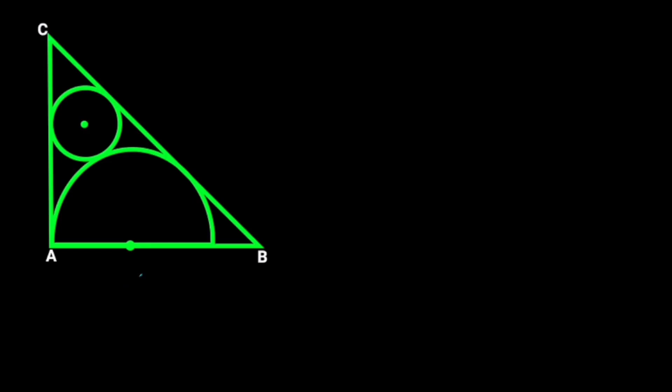Triangle ABC is a right triangle, as shown in the figure, where AB equals 8 cm and AC equals 6 cm. If BC and AC are tangents to the circle in the semicircle, find the area of the circle. Note that the figure is not drawn to scale.